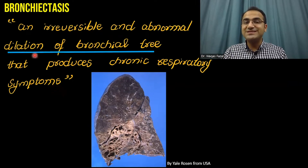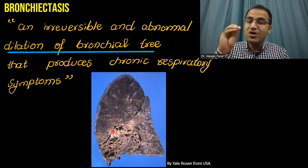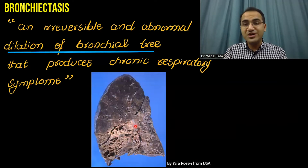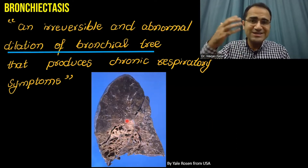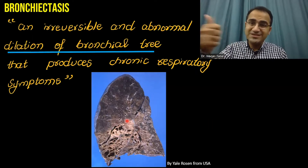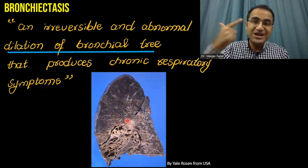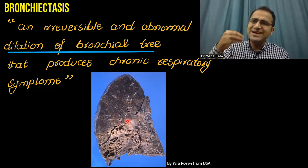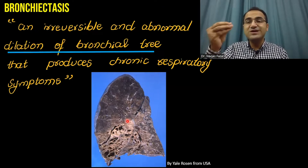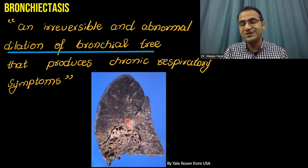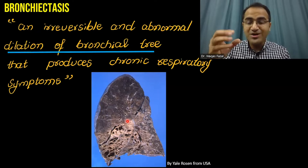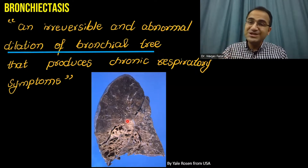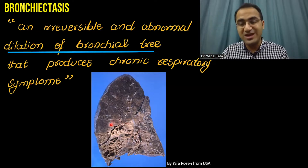In bronchiectasis, there is abnormal dilation of the bronchioles. That abnormal dilation of the bronchioles leads to excess mucus production, and there is dilation of the bronchi and bronchioles. Whenever there is excess mucus production, that mucus blocks the bronchioles. The bronchioles are blocked and behind that block, there is infection which leads to further destruction of the lungs.